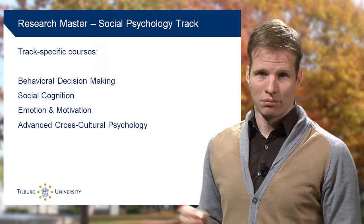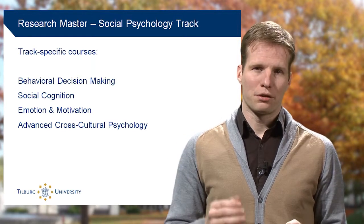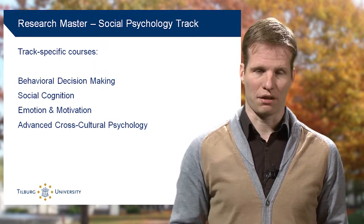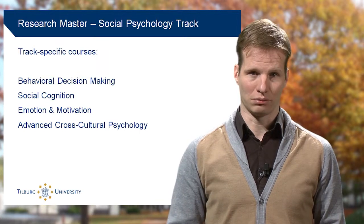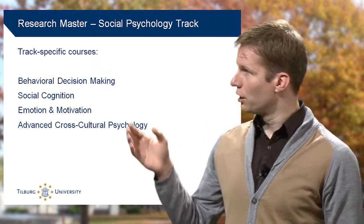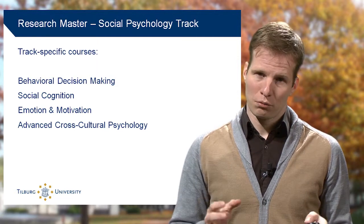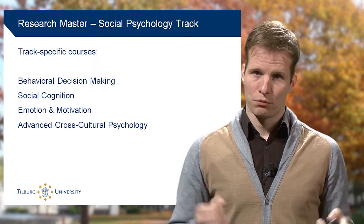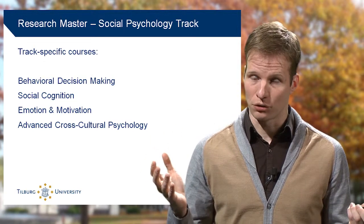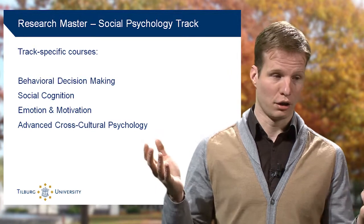So let's have a look at them. The first three courses more or less represent behavior, cognition, and affect — the three foundations of social psychology. The first course, Behavioral Decision-Making, is not only about decision-making in a social-psychological context, but also more in a general sense. So we also discuss rational economic models and deviations from rational economic models, as in behavioral economics.